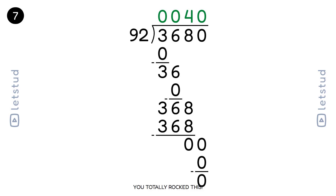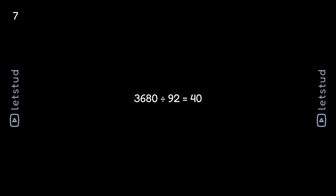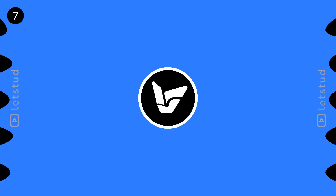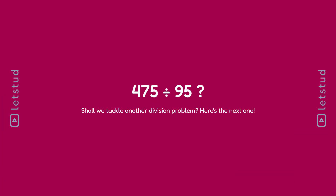You totally rocked this! We've finished this problem. Fantastic work — you divided 3680 by 92 perfectly. Shall we tackle another division problem? Here's the next one.